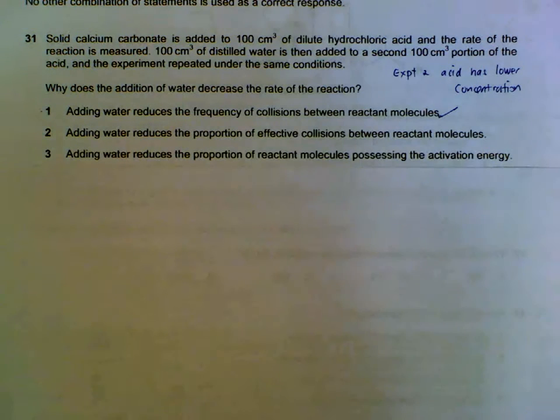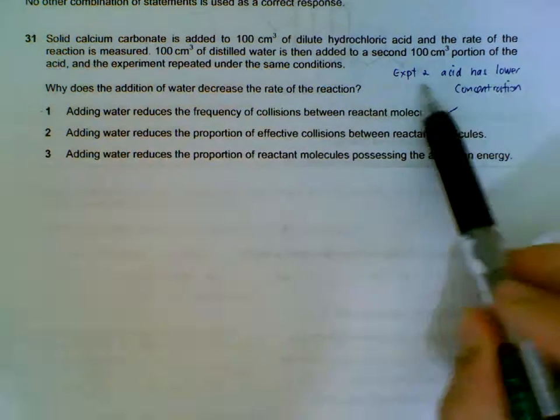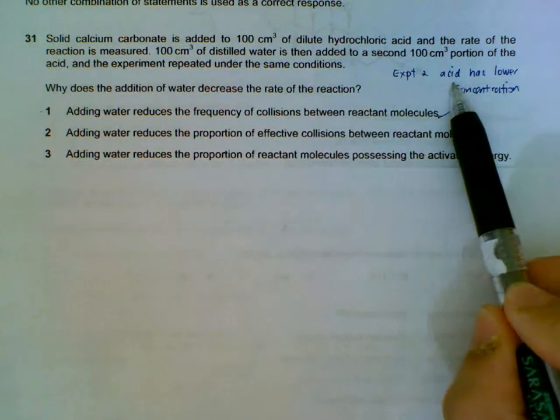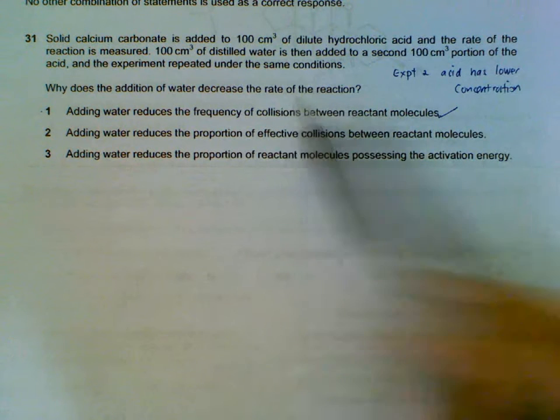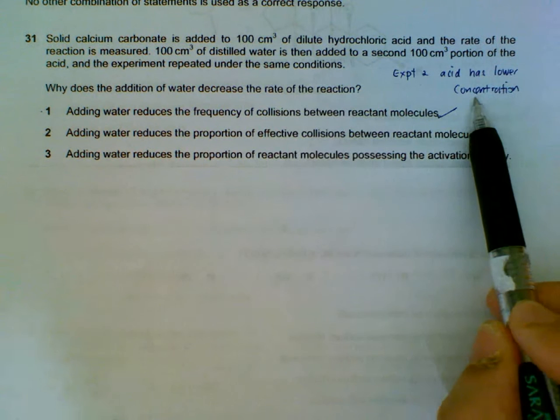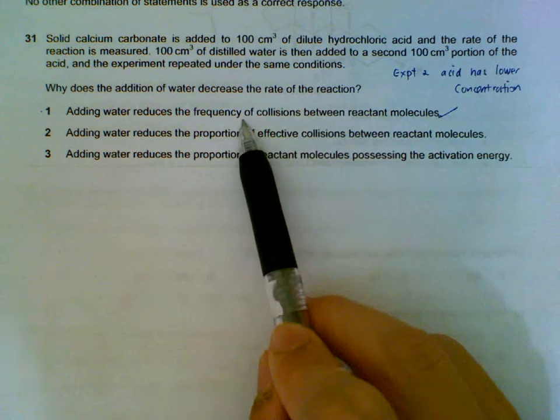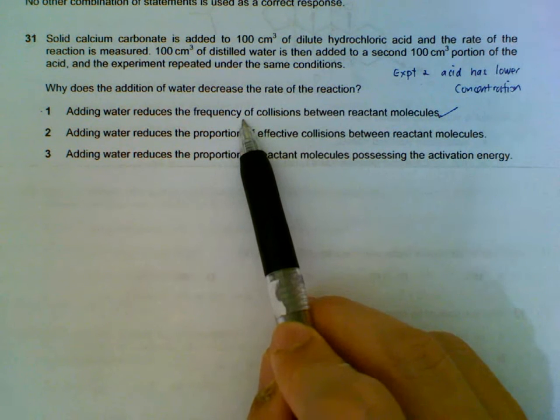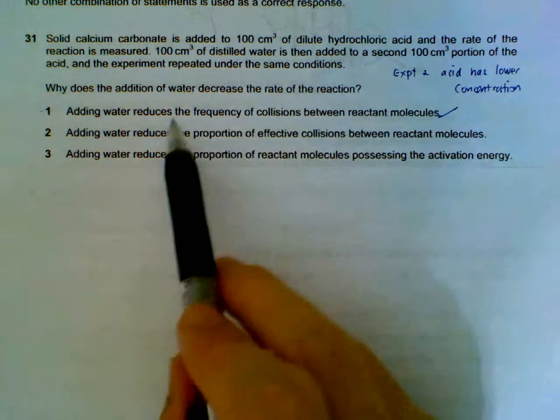Number 31. We have two experiments. Experiment 2 is carried out with an acid with a lower concentration. So why does adding the water decrease the rate of the reaction? With a lower concentration, there are less particles per volume. So the chances of them colliding will be lowered. The frequency of collisions between the molecules will be lowered. So this is one reason, statement 1.